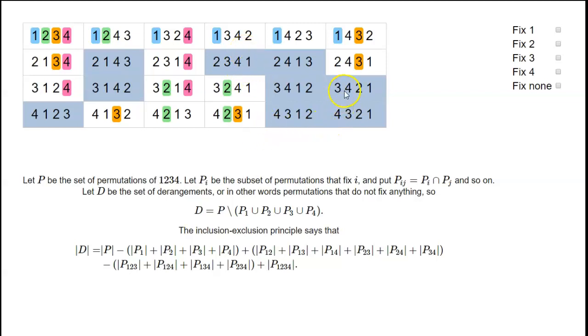Down here we've got the permutation 3, 4, 2, 1. That means the permutation that sends 1, 2, 3, 4 to 3, 4, 2, and 1 respectively.